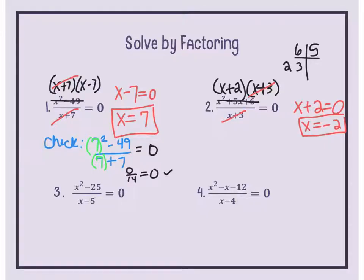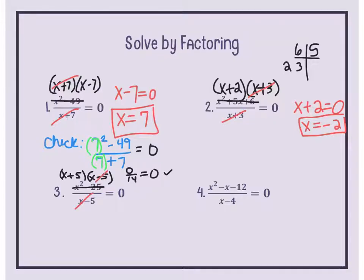For number 3, we again have two terms with a minus sign. Can I take the square root of both? If yes, this is a difference of squares. Square root of x squared is x, square root of 25 is 5. The signs are a sum and a difference. The matching term on numerator and denominator divides out to 1, leaving x plus 5 equals 0. Subtract 5 from both sides: x equals negative 5. When you plug it back in, it does work.